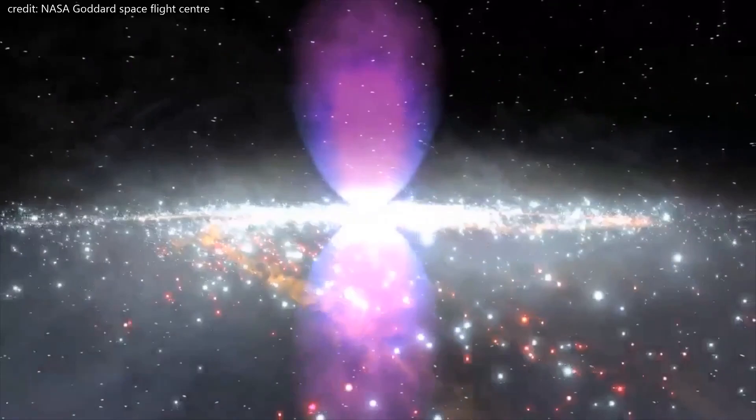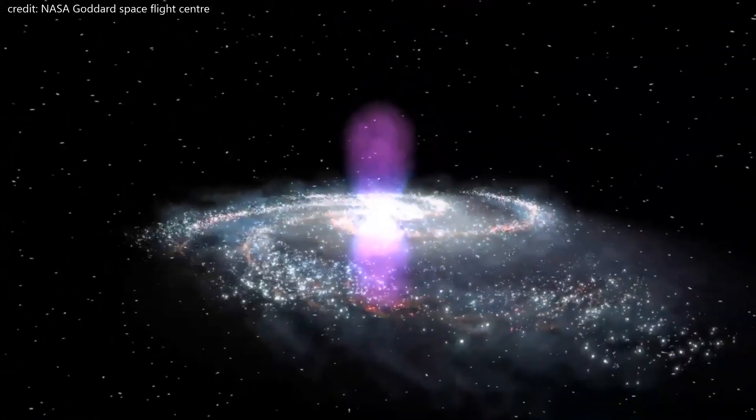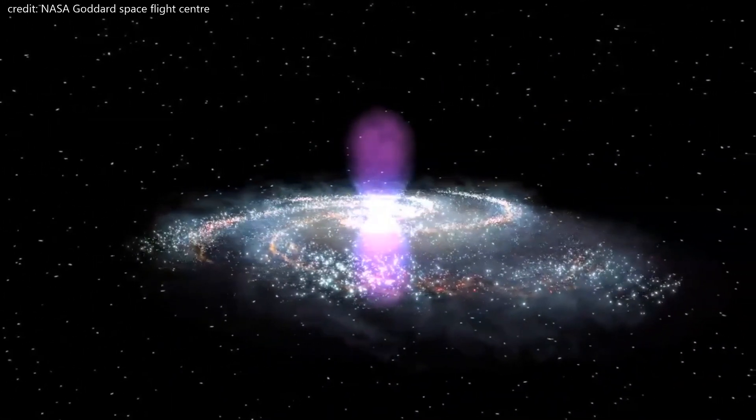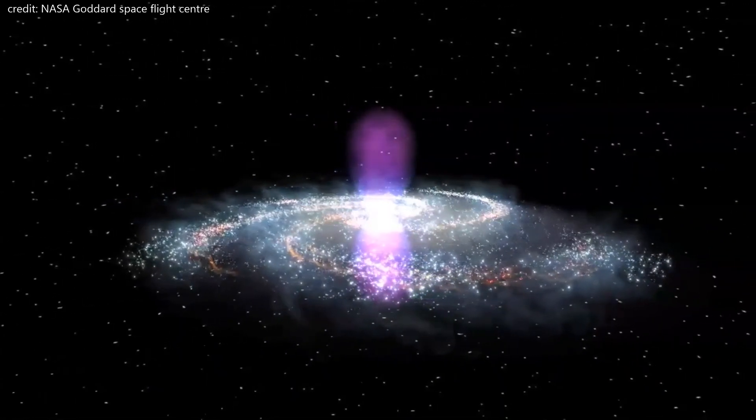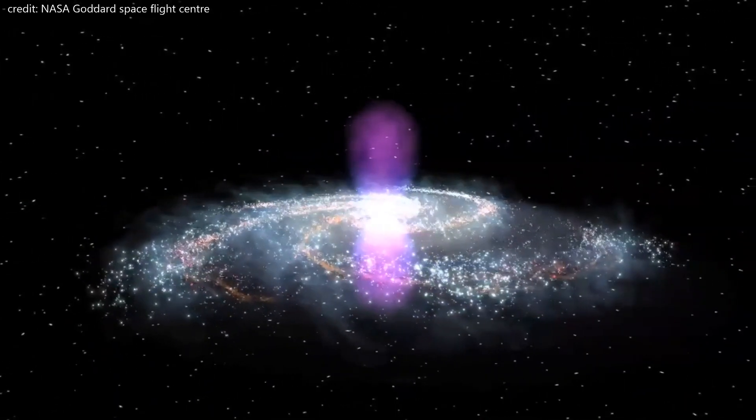The two enormous spheres each hover in seemingly empty space above and below the black hole in the Milky Way's nucleus. They are tangent to each other touching at the galactic center to form a squat hourglass shape. The entire structure looks like the number 8 or a sideways infinity symbol.